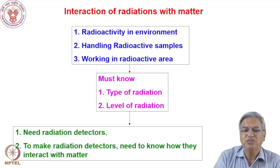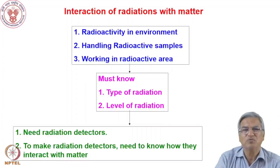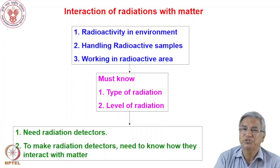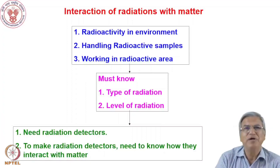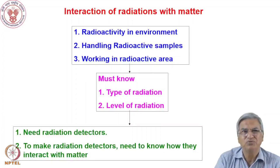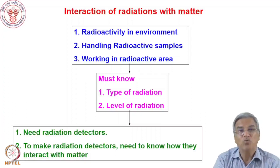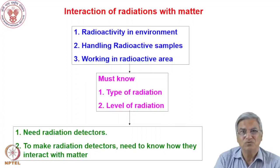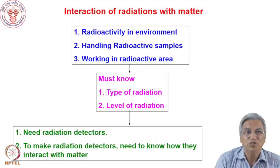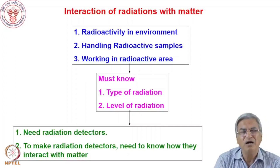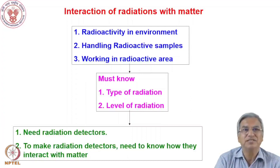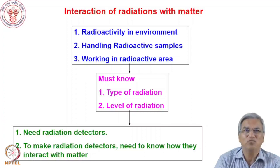Why do we need to study the subject of interaction of radiation with matter? We know that radioactivity is there in the environment — our body contains radioactivity in terms of carbon-14 and potassium-40, and nature contains uranium and thorium in the earth's crust. We are amidst low levels of radiation and we need to know how much it is. We may be handling radioactive samples like actinides or radioactive isotopes for experiments, or working in a radioactive area. Since the radiations are invisible, we need suitable detectors. To make radiation detectors, we need to know how these radiations interact with matter.